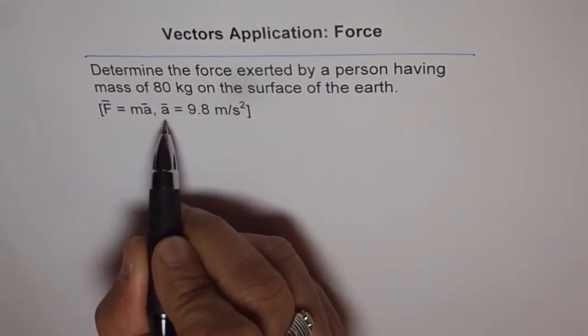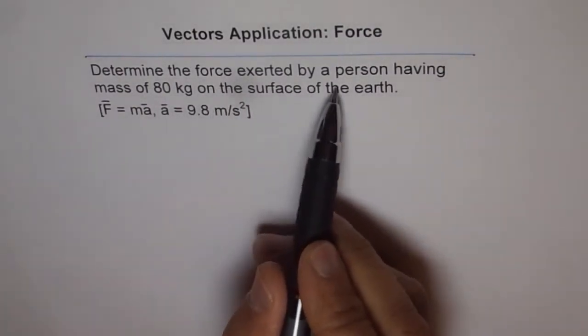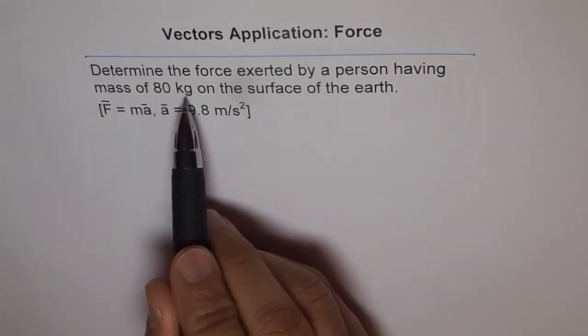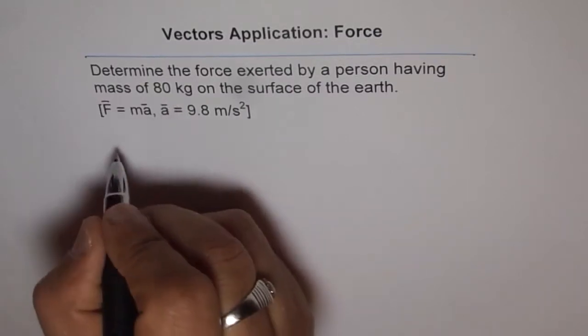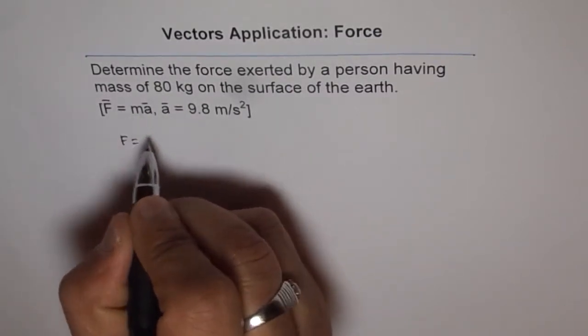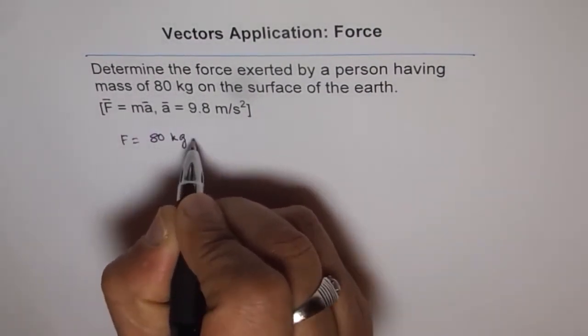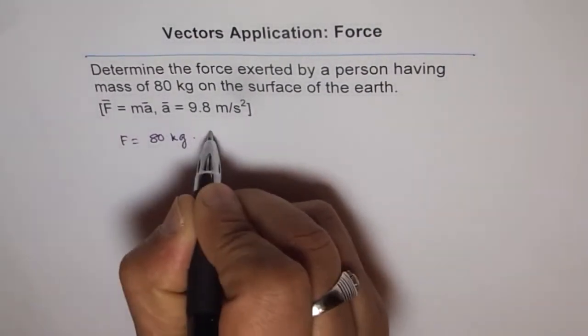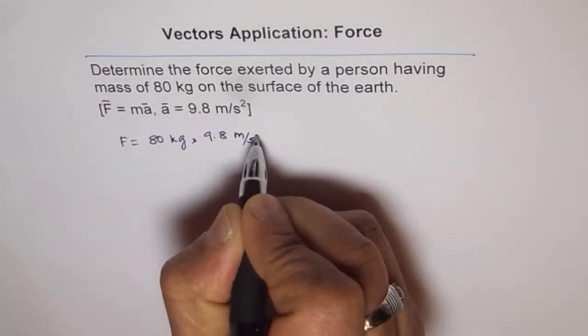Acceleration due to gravity is 9.8 meters per second square. So when we say, what is the force exerted by a person having mass of 80 kg, then the force will be equal to mass, which is 80 kg times 9.8 meters per second square.